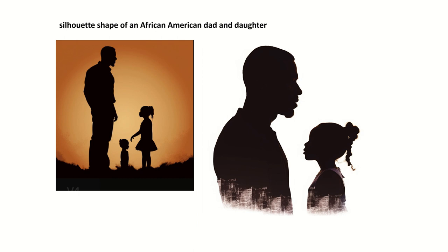I just typed in a very simple 'silhouette shape of an African American dad and daughter.' A lot of people question me as to why I use African American so much — it's because I try to stick to black art that's hard for me to find. Since I'm creating digital art and I know I like black art, that's why I use African American in a lot of my prompts. But you don't have to — you can just put 'silhouette shape of a dad and daughter' and you're going to get a great image as well.